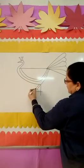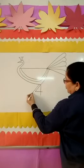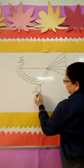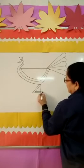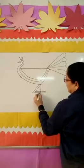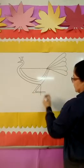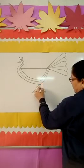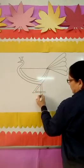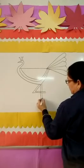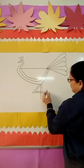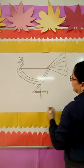For legs again you will write 4. Like this. And one like this. Draw feet of the peacock like this.